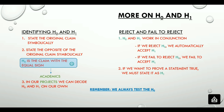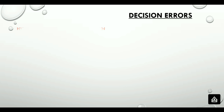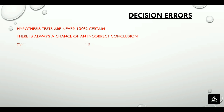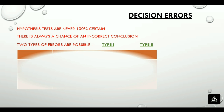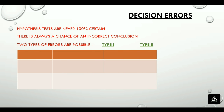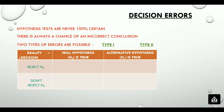Hypothesis tests are never 100% certain — there is always a chance of error. There are two possible types of errors: type 1 error and type 2 error. Rejecting the null hypothesis when it is true is type 1 error, denoted by alpha. Failing to reject the null hypothesis when it is false is type 2 error, denoted by beta.